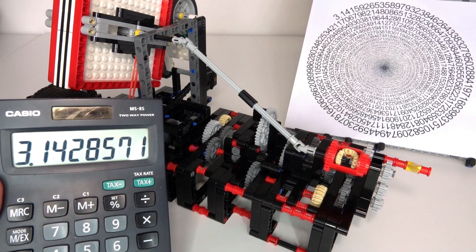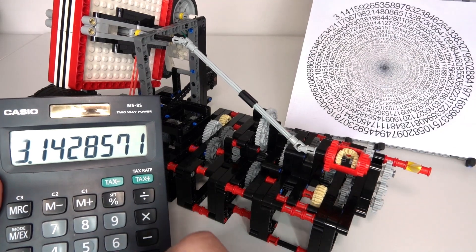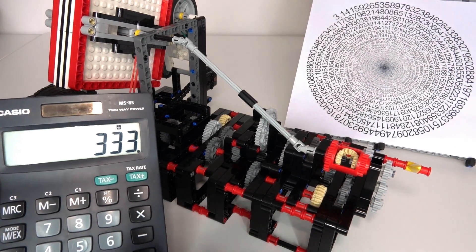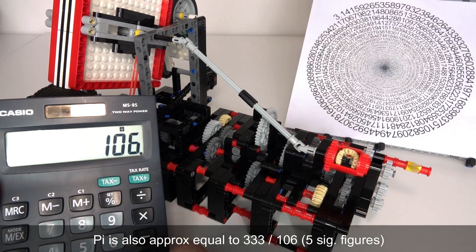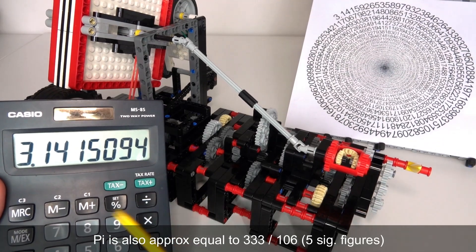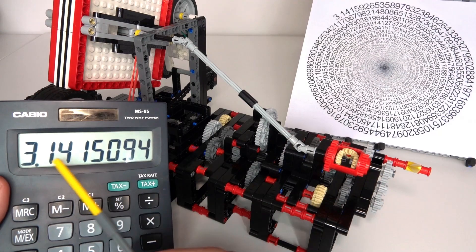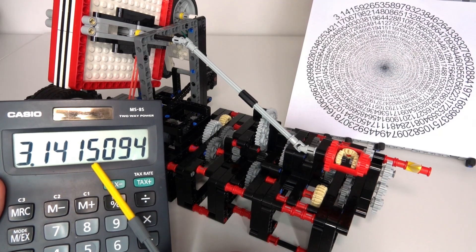If you want it more accurately, you generally need longer fractions. Another fraction would be 333 divided by 106, and that will give you pi to five significant figures, which is two significant figures more accurate.